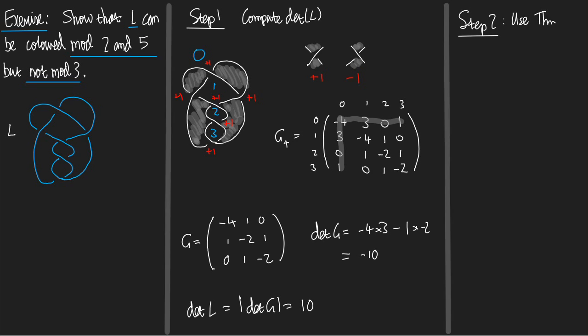And what we have is that the GCD. Well, I'm trying to answer the question, can I colour L mod 2? Well, that's if and only if the GCD of the determinant, which is 10 and 2, is bigger than 1. Well, the GCD in this question is 2, which is bigger than 1.